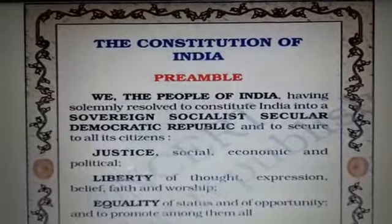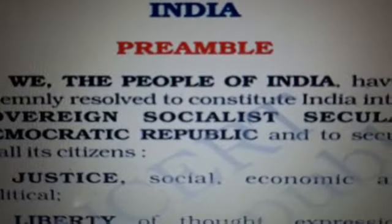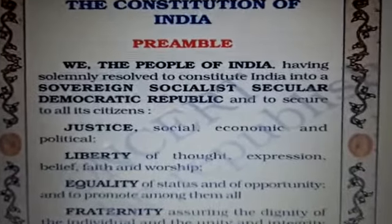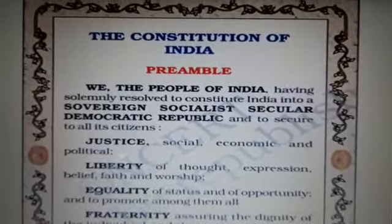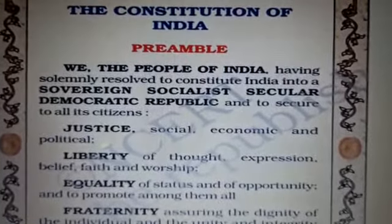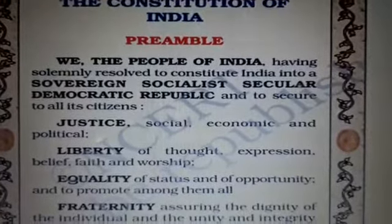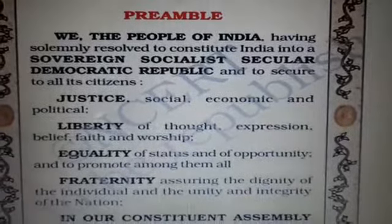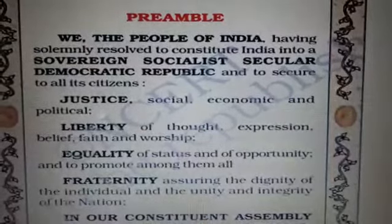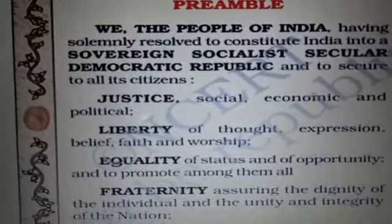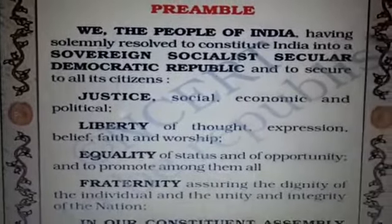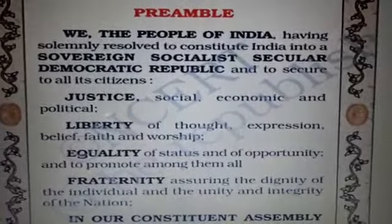'Socialist' means wealth is generated socially and should be shared equally by society. The next keyword of the preamble is 'secular,' meaning citizens have the freedom to follow any religion and there is no official religion of the country. The government treats all religious beliefs and practices with equal respect. Next is 'democratic,' meaning a form of government where people enjoy equal political rights, elect their rulers and hold them accountable.